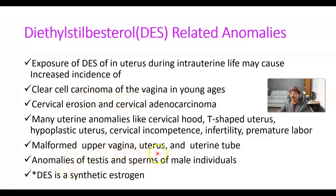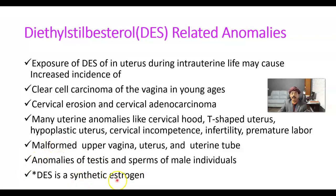Malformed upper vagina, malformation of the uterus and uterine tube may also result. Anomalies of the testes and sperm anomalies in male individuals are also possible with DES exposure. There may also be anomalies of the epididymis. Diethylstilbestrol is a synthetic estrogen used in the 1970s to manage premature delivery, preterm labor, abortion, preeclampsia, and diabetes — but it is a teratogenic drug and should not be used during pregnancy. It is not used nowadays.